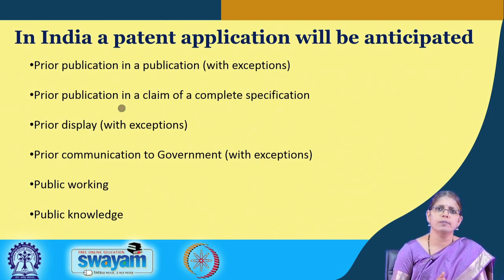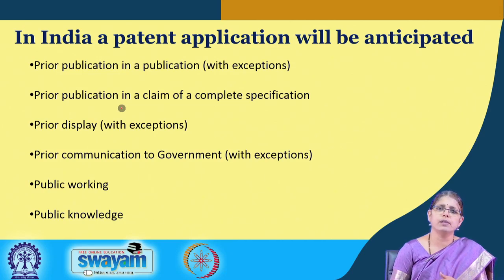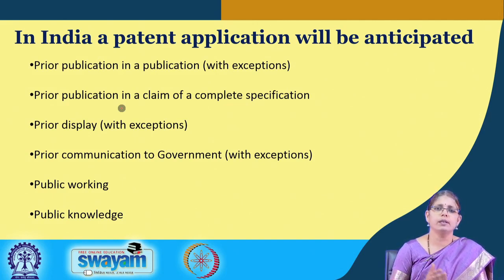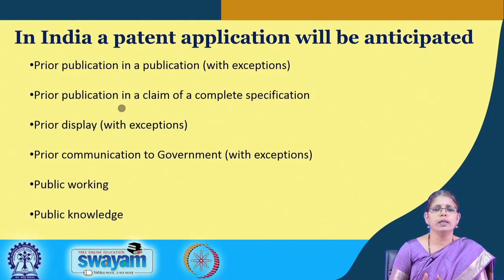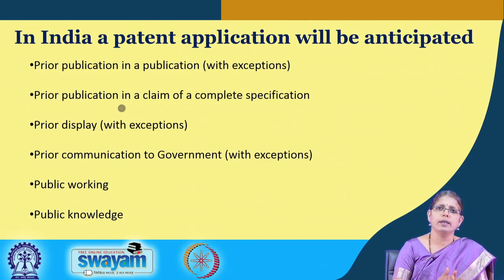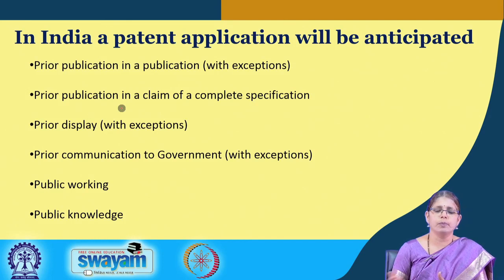There are certain exceptions where we have the grace period. For instance, if you have already published your application or your data as a journal publication, you have one year by which you should actually file a patent application. Within one year if you file, you can avail what we call the grace period. Similarly, if you have disclosed it in the proceedings of a particular journal society, again you have one year within which you should be filing a patent application.